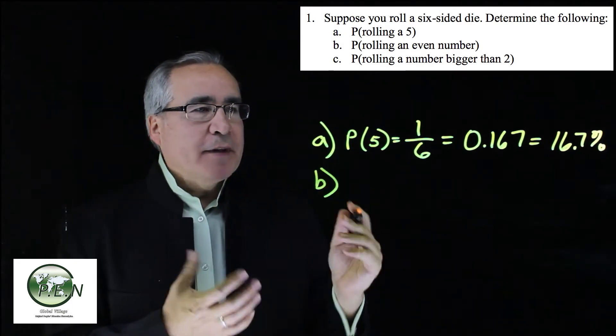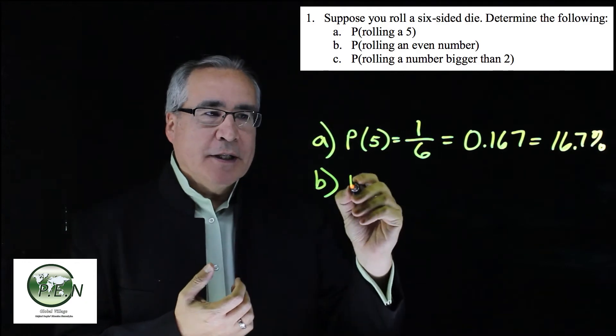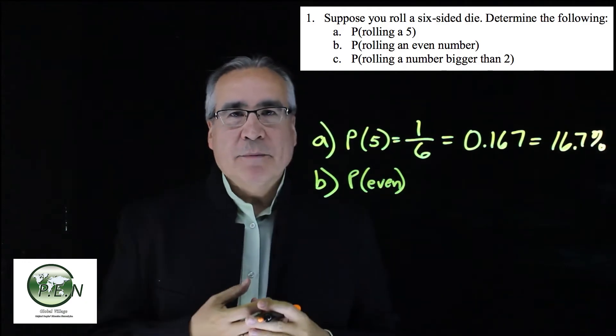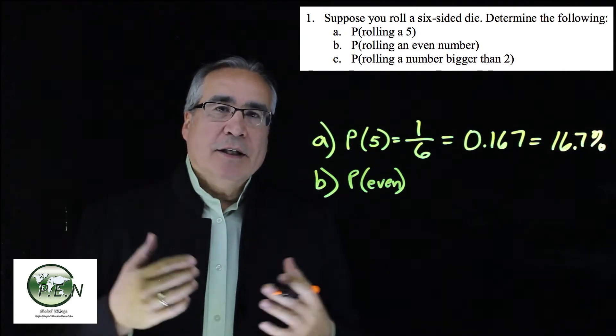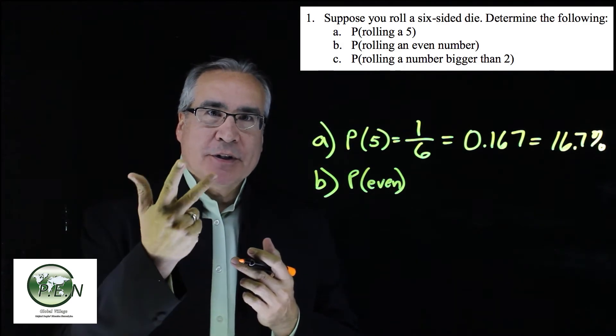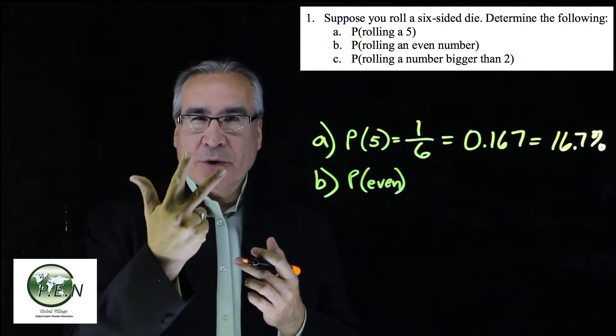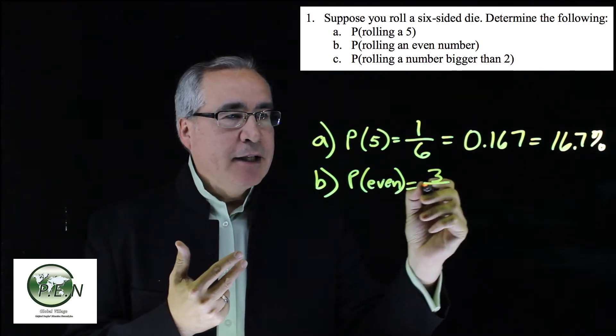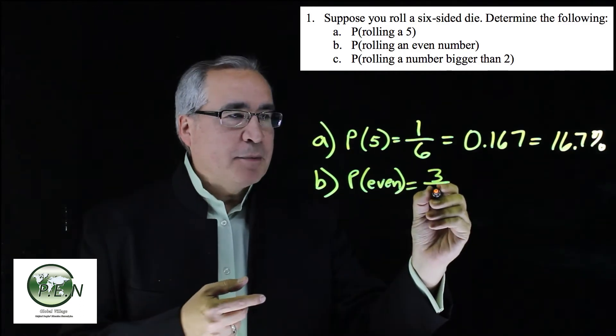The big question asks us, what's the probability that we get an even number? Even numbers, two, four, six, eight. On a die, there's how many? Two, four, six. We stop at six. So there's only three numbers that are even on a die out of a total of six possibilities.